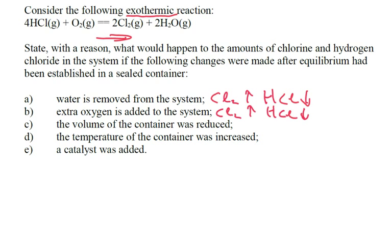If the volume of the container was reduced, the pressure is going to increase. On the left-hand side I've got 4HCl + O₂, so five molecules. On the right I've got 2Cl₂ + 2H₂O, so four molecules. By reducing the volume, pressure increases, and the equilibrium position moves towards the right — the side with fewer molecules. So Cl₂ will increase and HCl will decrease.